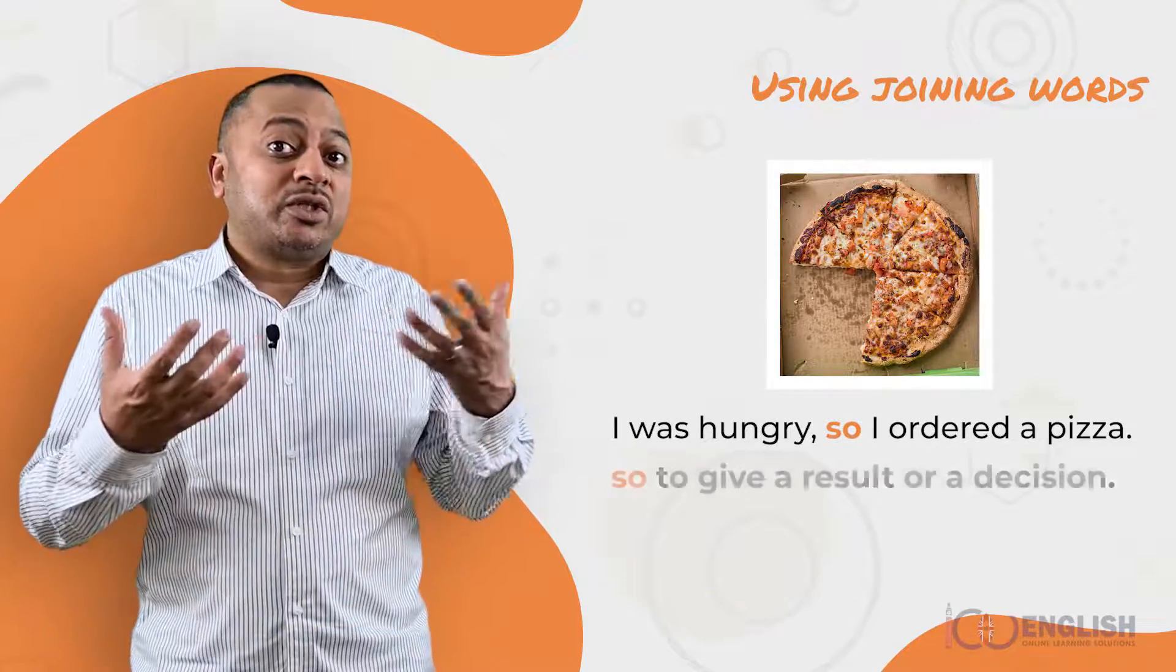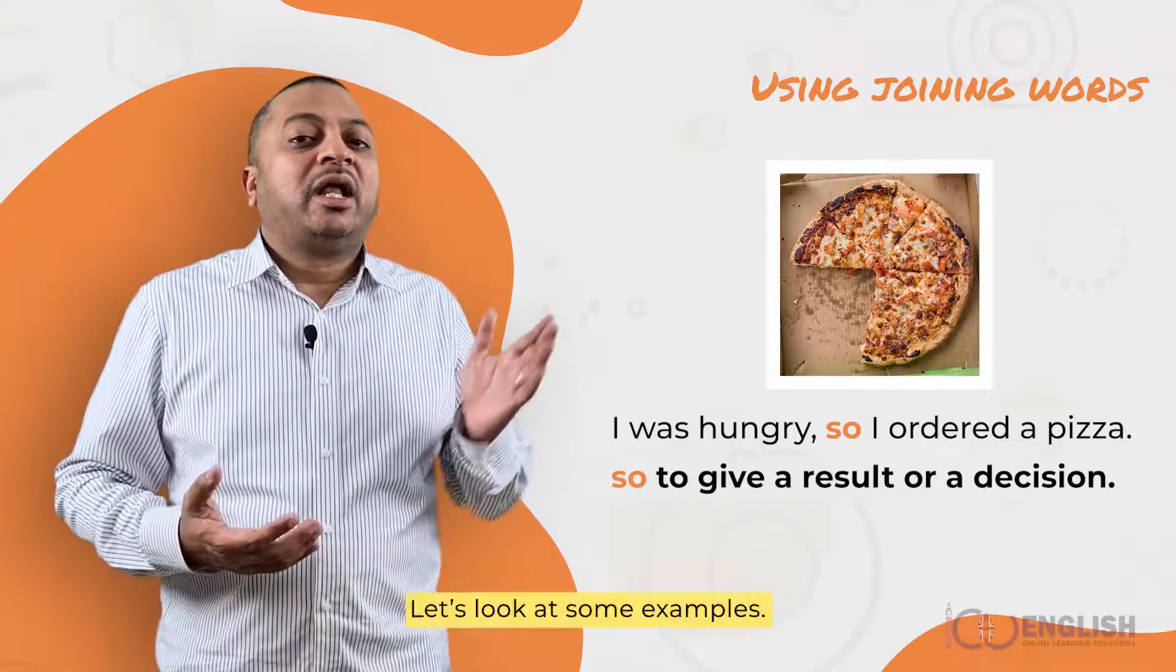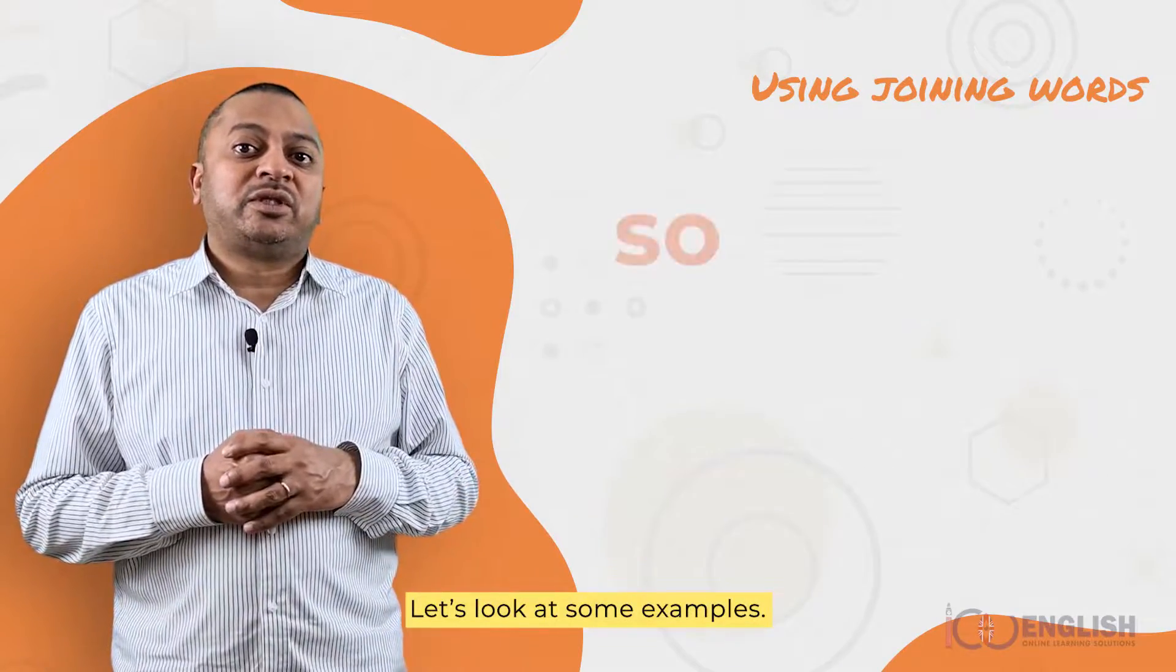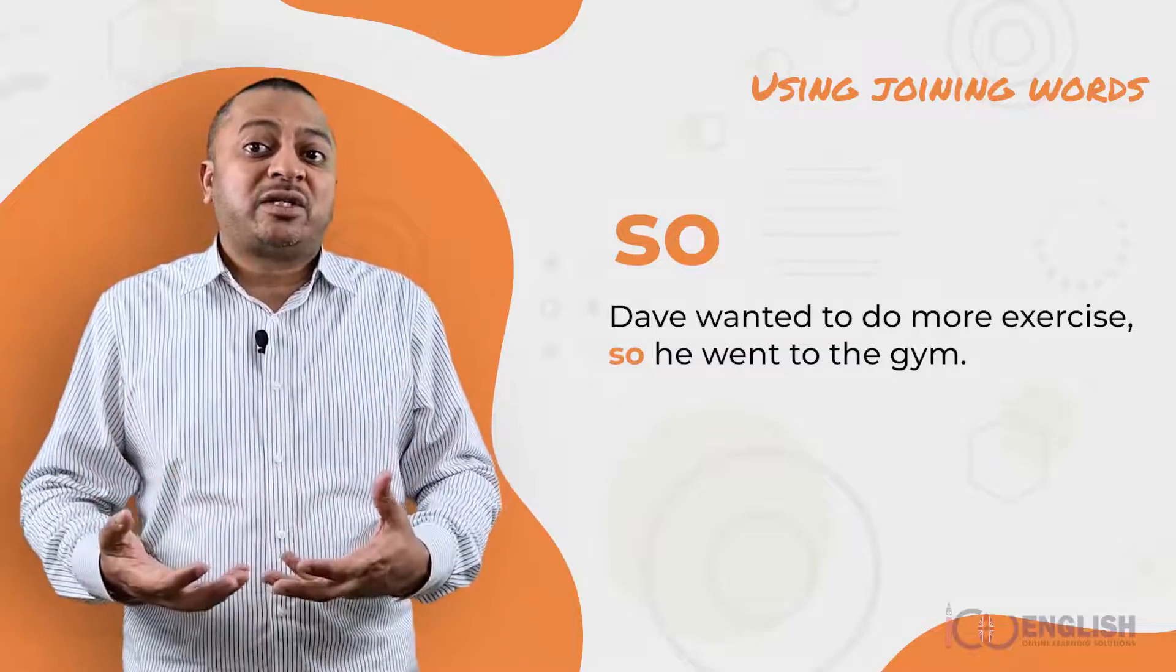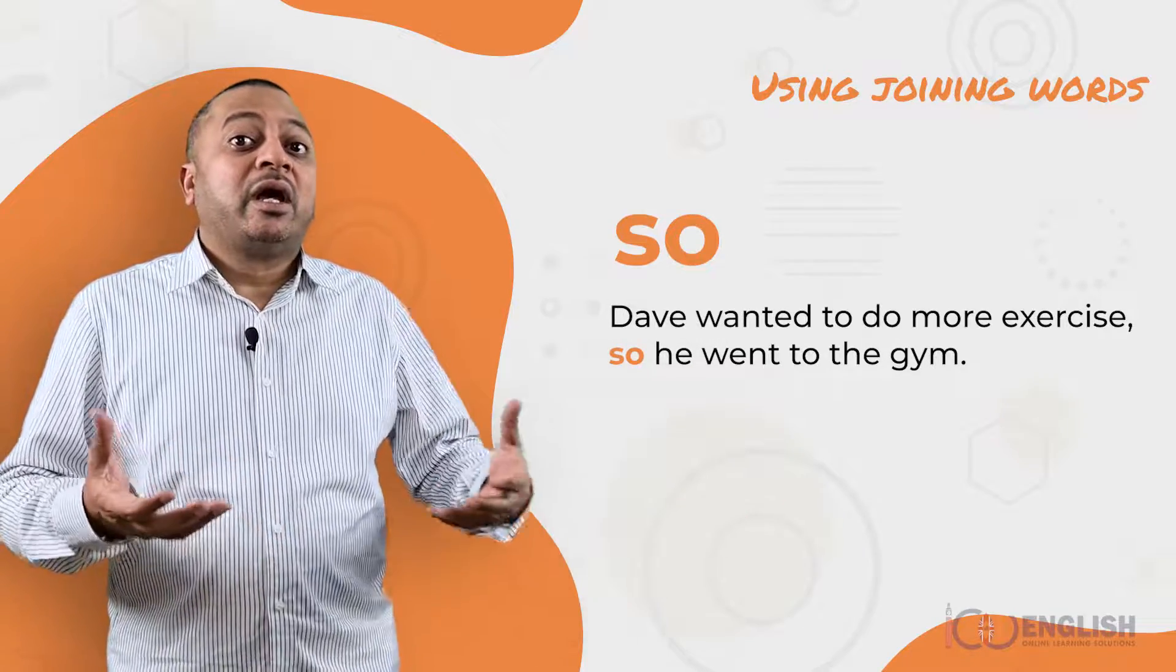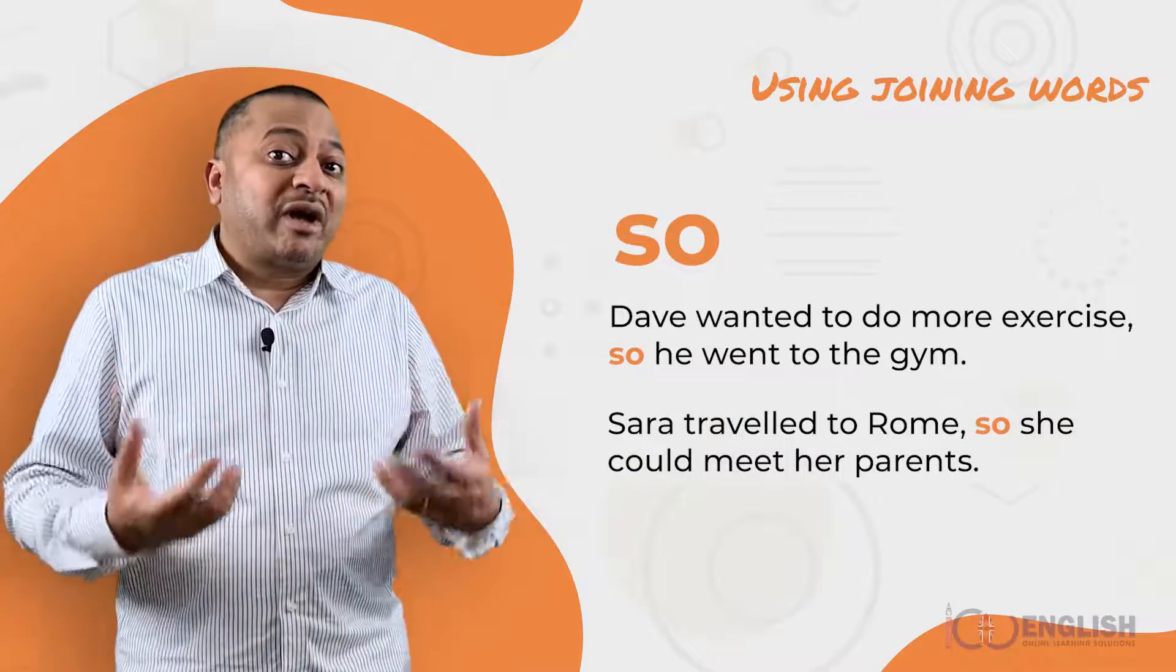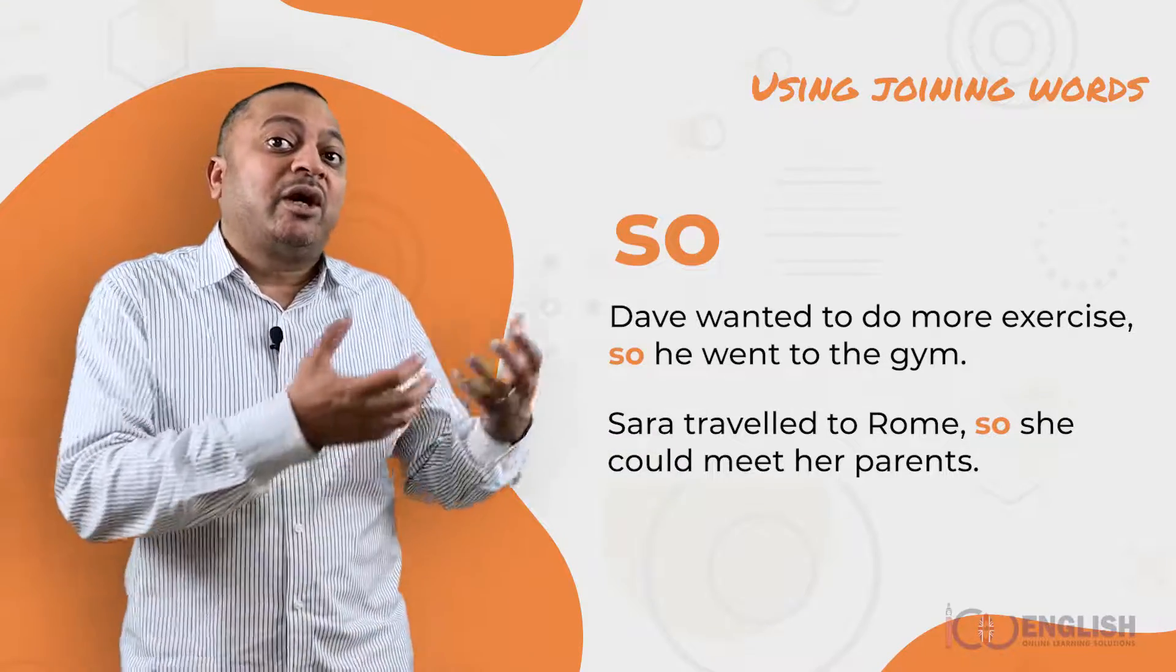We use so to give a result or a decision. Let's look at some examples. Dave wanted to do more exercise, so he went to the gym. Sarah travelled to Rome so she could meet her parents.